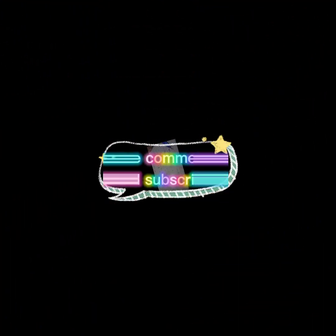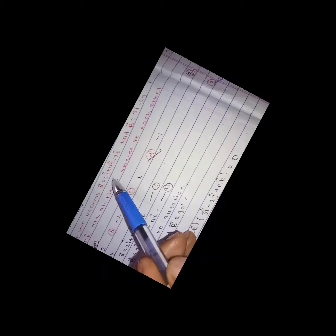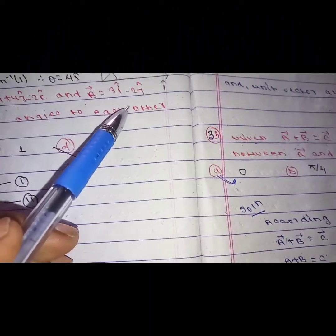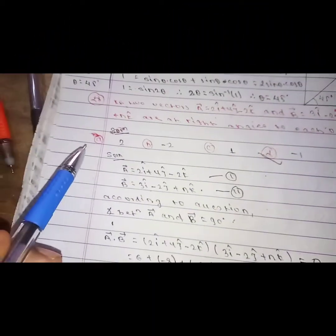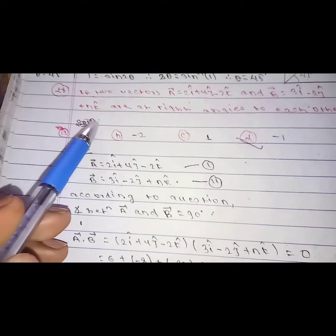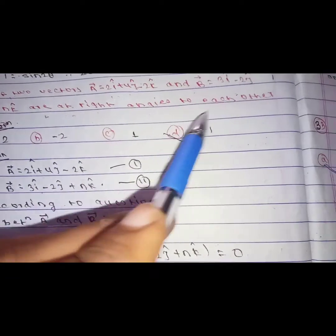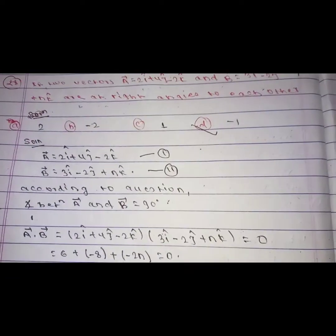Okay, sort of question. If two vectors, a equals 2i plus 4j minus 2k and b equals 3i minus 2j plus nk, unit vectors are at right angle to each other.